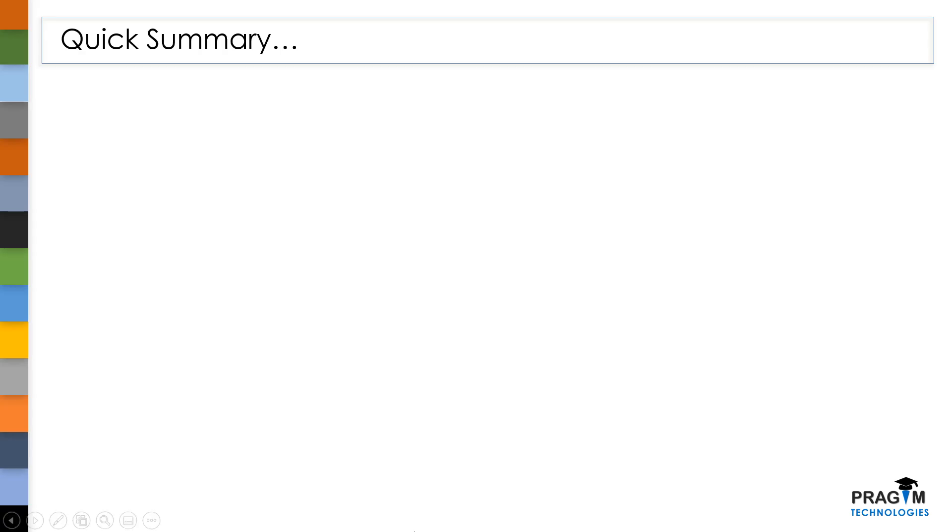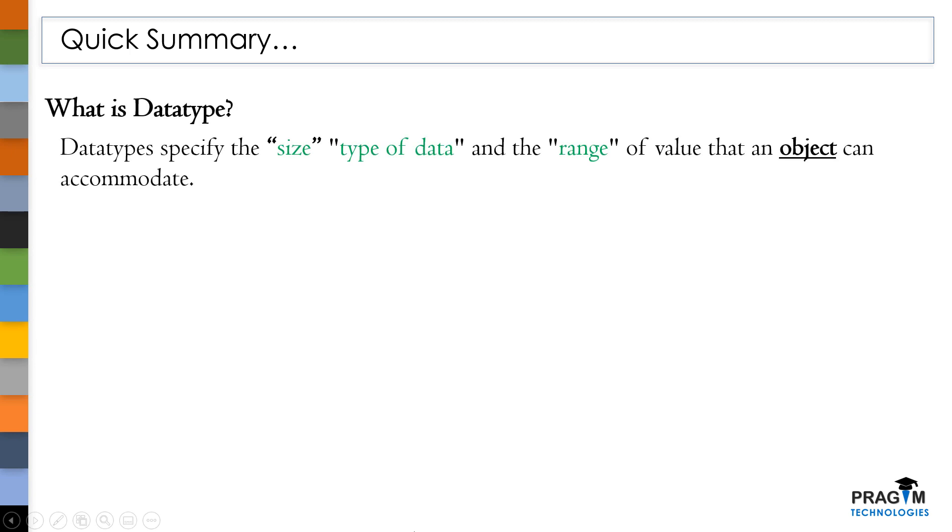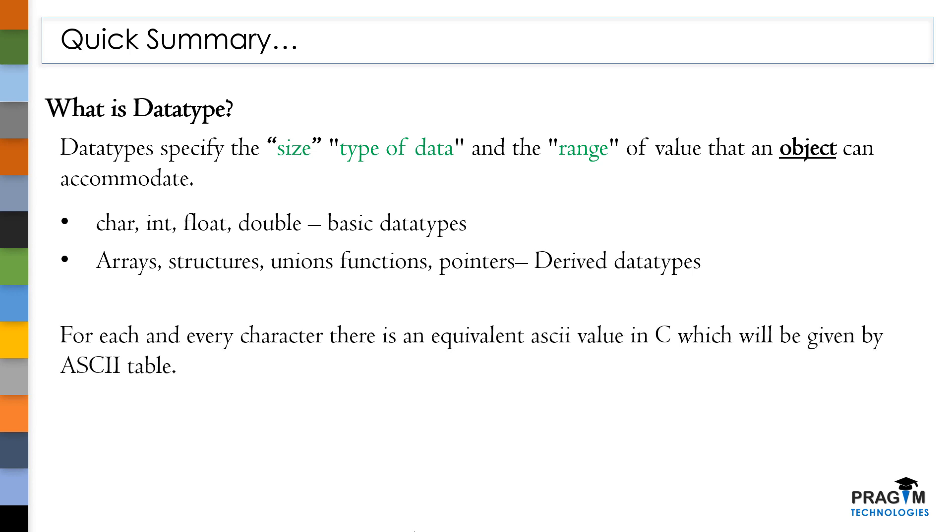Let's see a quick summary on what we have discussed today. Data types specify the size, type of data and the range of value that an object can accommodate. Char, int, float and double comes under basic data types. And arrays, structures, functions, unions and pointers comes under derived data types. For each and every character, there is an equivalent ASCII value in C. In computer memory, one nibble equal to 4 bits, whereas one byte equal to 8 bits.